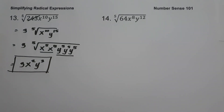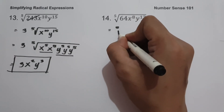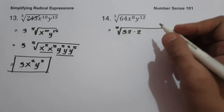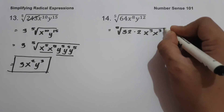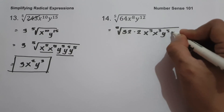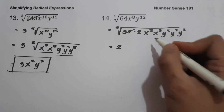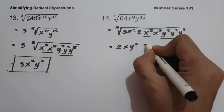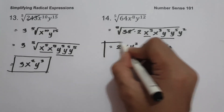On our last example, we have fifth root of 64x raised to 8, y raised to 12. To simplify, we find the factors of 64 where one factor is a perfect fifth power. That is 32 times 2. We divide the exponents of x and y by 5. For x raised to 8: x to the 5th and x cubed. For y raised to 12: y to the 5th, y to the 5th, and y squared. The fifth root of 32 is 2. We have x to the 5th giving x, and 2 y-to-the-5th terms giving y squared. So our answer is 2xy squared, fifth root of 2x cubed y squared.